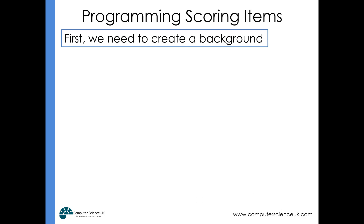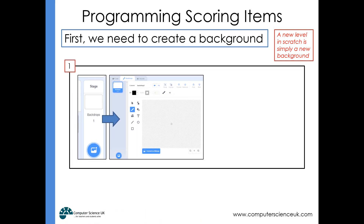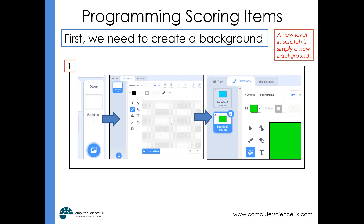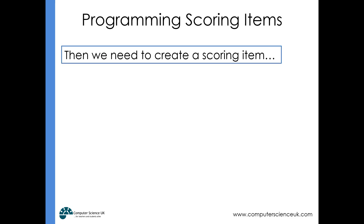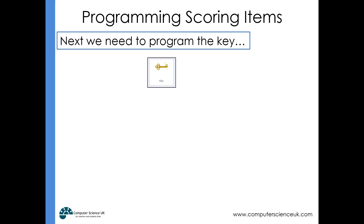A different level is just a different background in Scratch, so we need to create a new backdrop. We'd draw our backdrop and have two backdrops — backdrop one and backdrop two, which are level one and level two. Then we need to create the end-of-level item: create a brand new sprite, choose a door or a key, and program that end-of-level item.